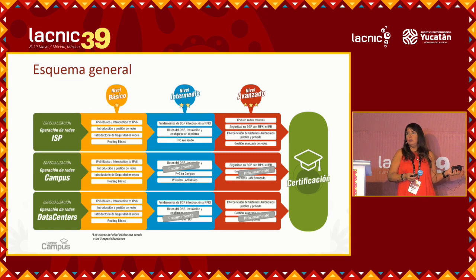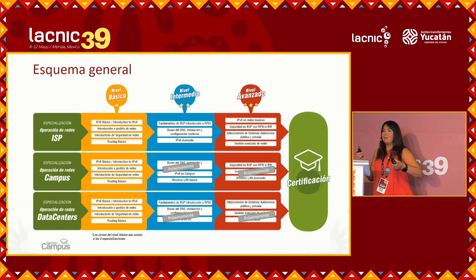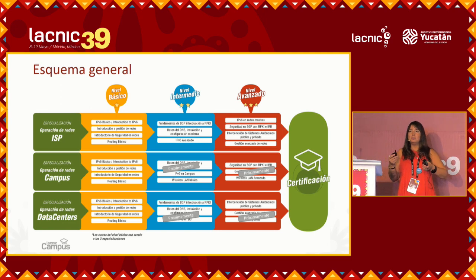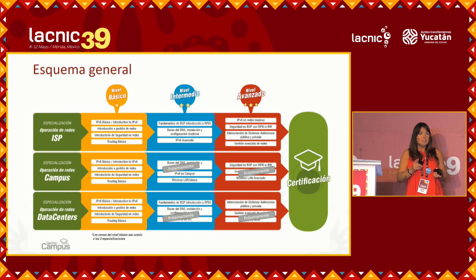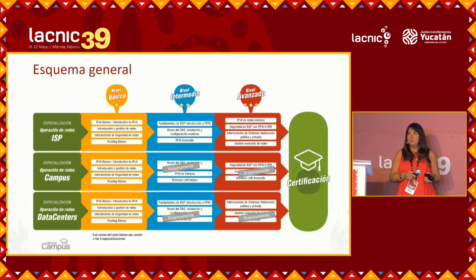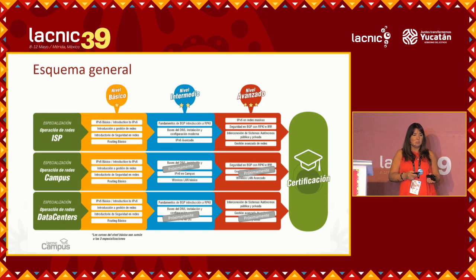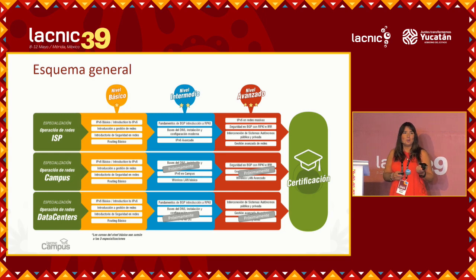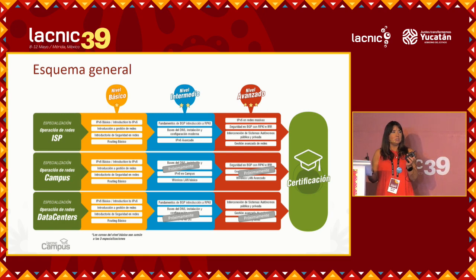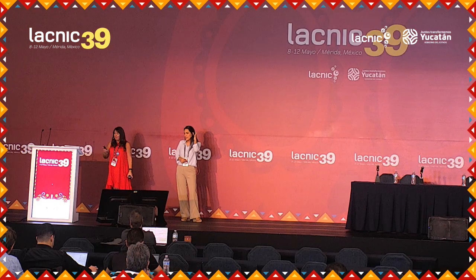The order in which you take the courses is flexible — you don't have to do the basic level first and then intermediate. As you finish different courses, the platform will estimate the level you have reached. You might already be at an intermediate level without realizing it. The basic level is common to all three specializations, so if you completed it, it's time to think about how you want to proceed with your training.